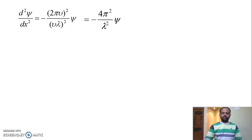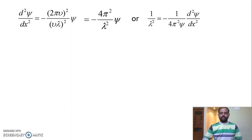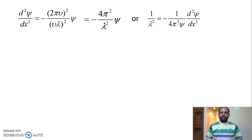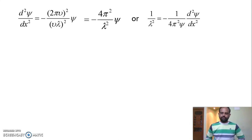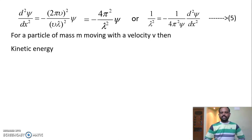For the next step of the derivation, we need the expression for 1/λ². By rearranging the previous expression, we get 1/λ² equal to −(1/4π²ψ) times d²ψ/dx². We call this equation number five.